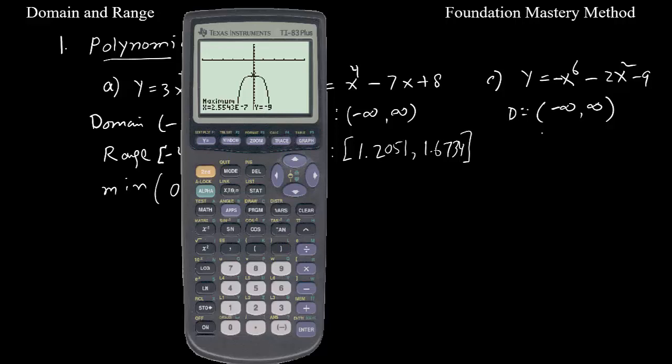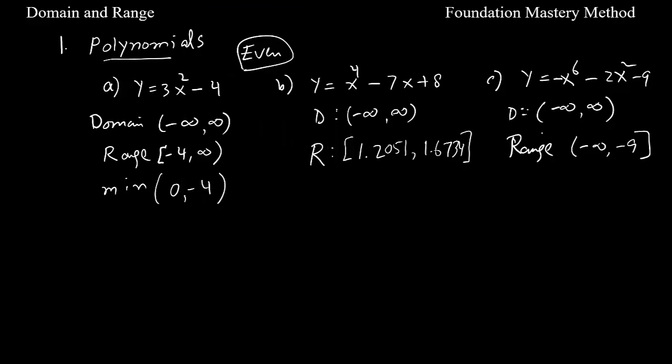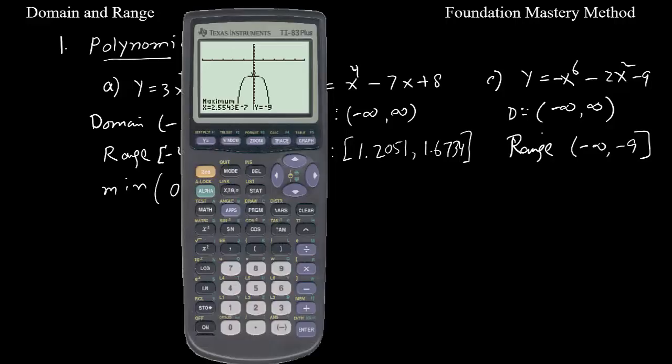So you can say your range will be negative infinity to negative 9. We see our domain for polynomial function always will be all real numbers, negative infinity to positive infinity, but the range changes. If it is odd, then range also will be negative infinity to positive infinity. Thanks.